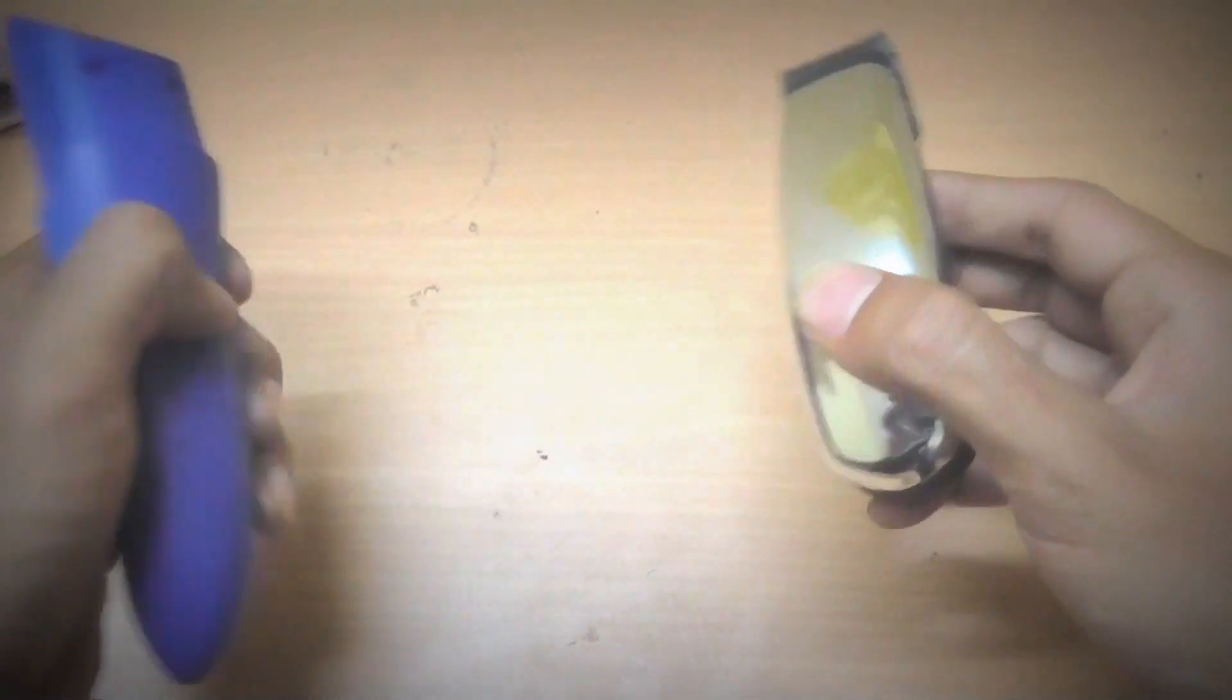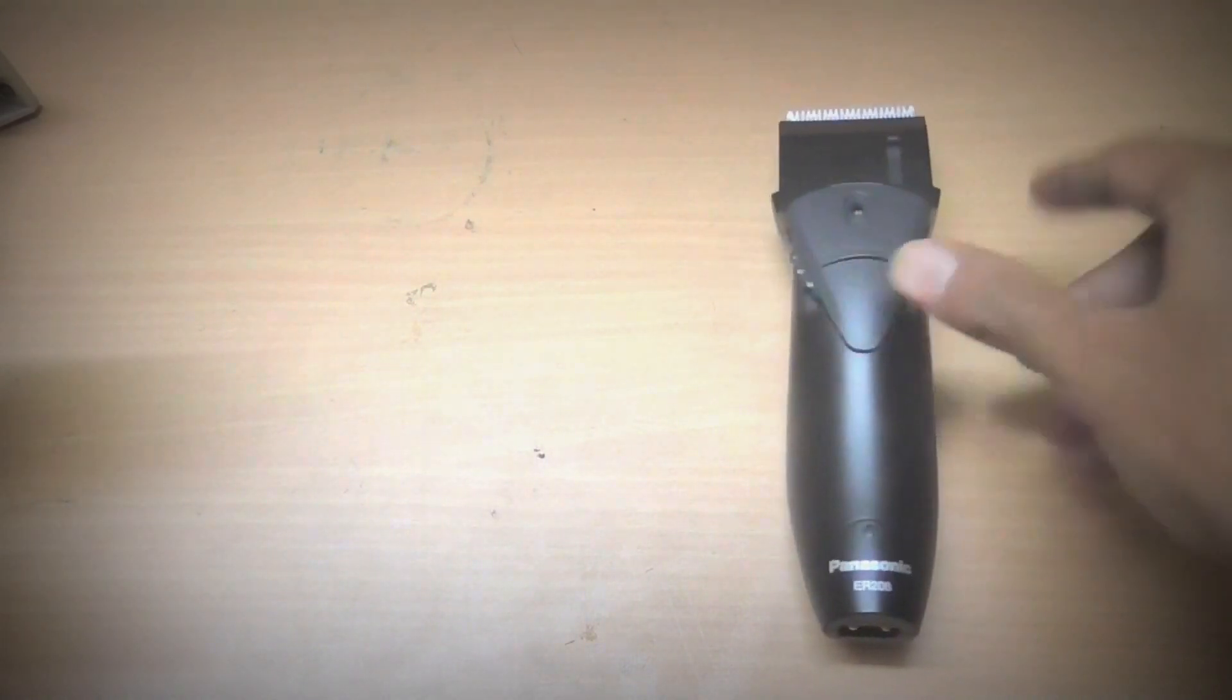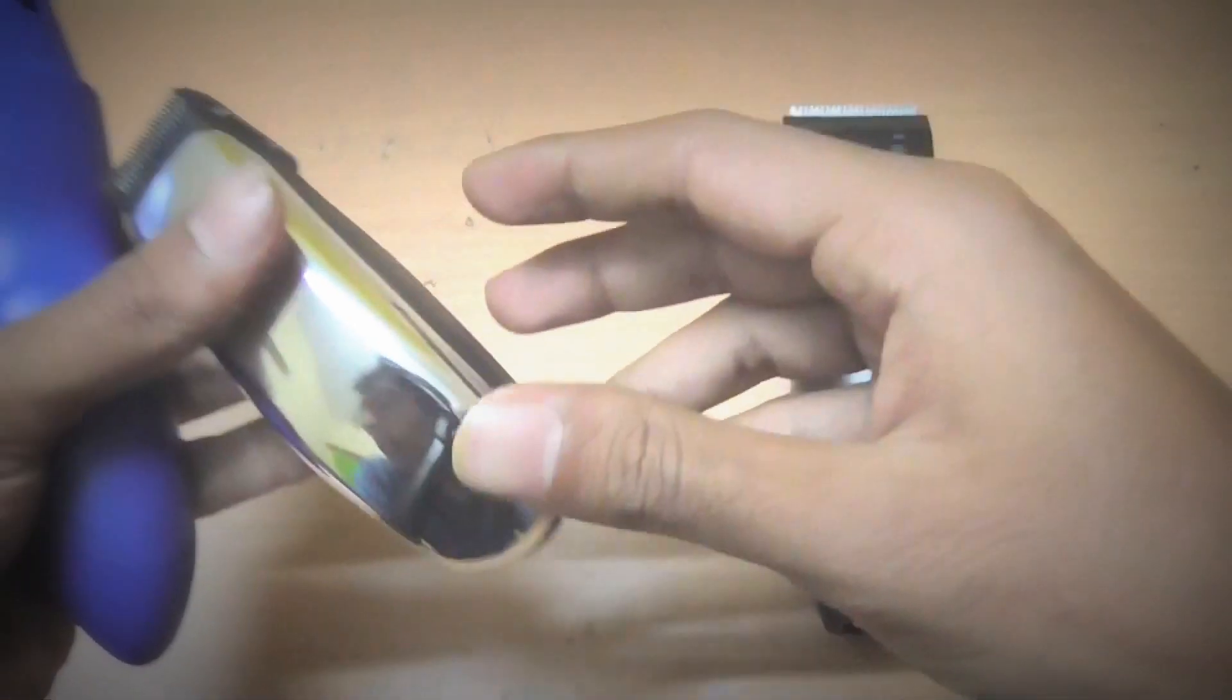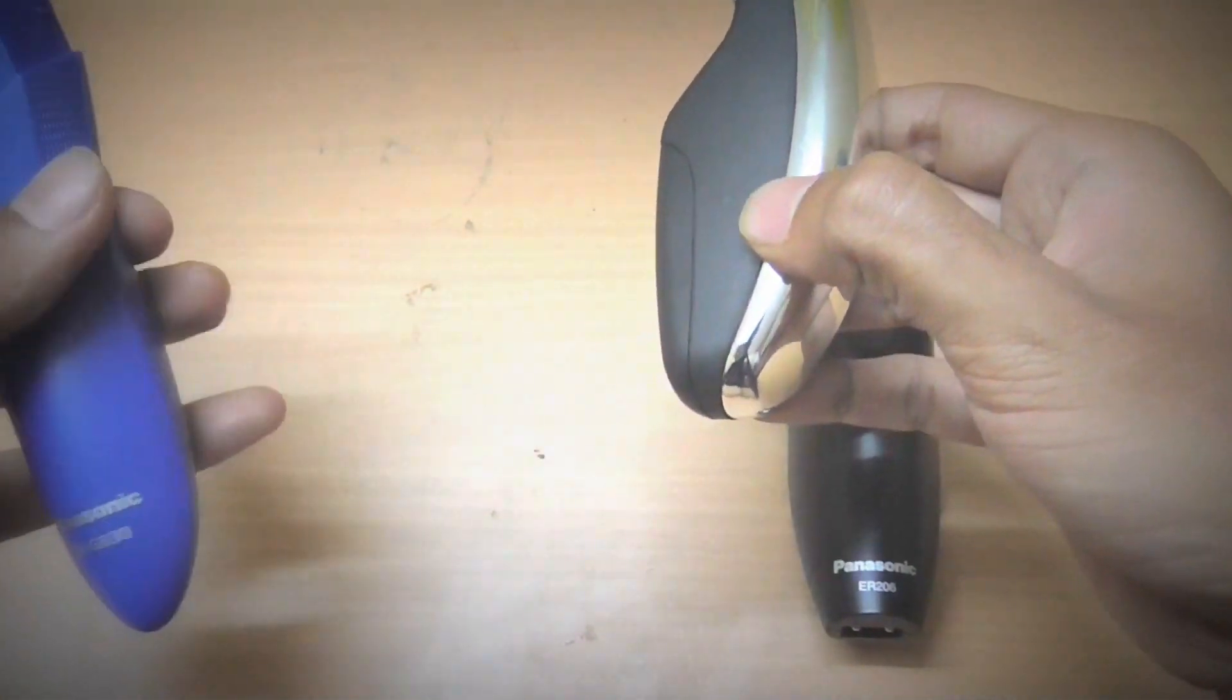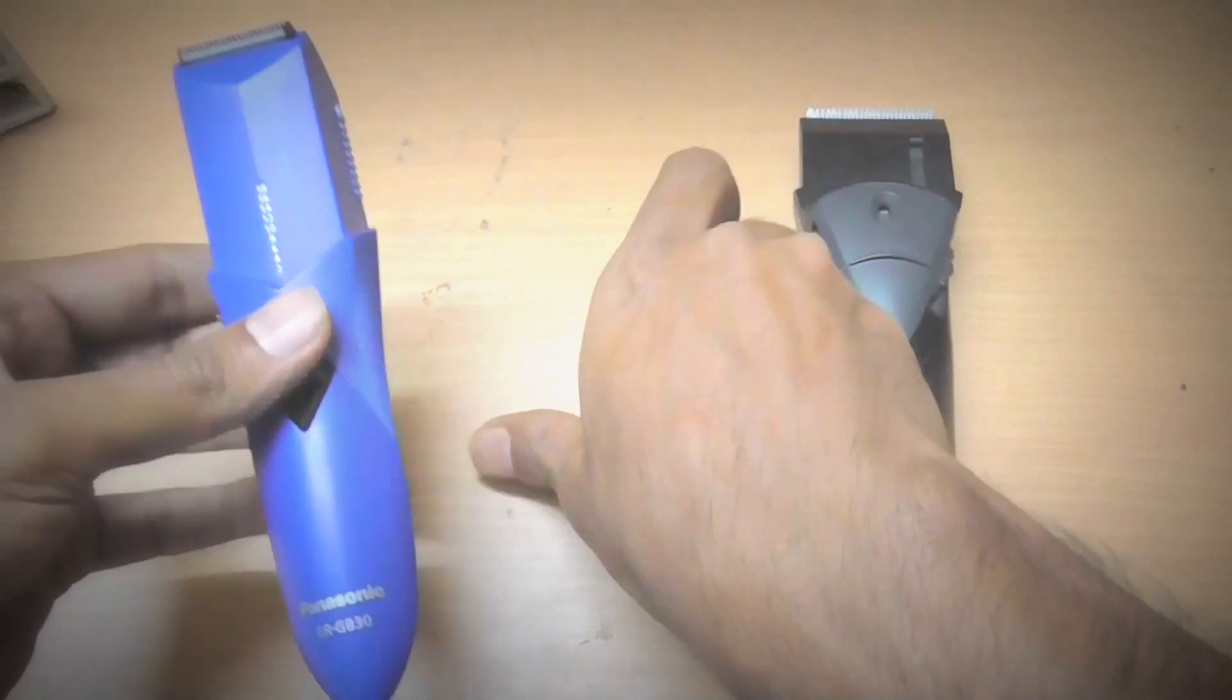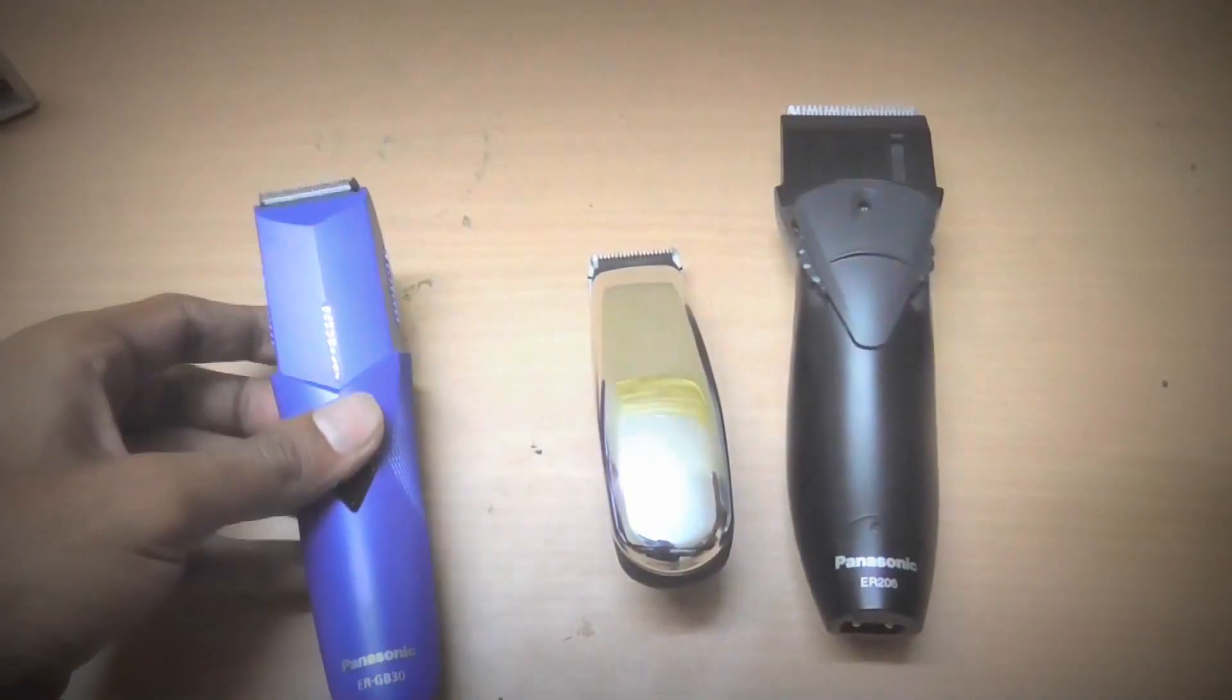On the basis of performance and cost, I will rank these 3 trimmers. The first one is Panasonic ER206. I will rank it on the first position. The second one will be Wahl trimmer. This is because it is more economical and half of the price of this Panasonic ERGB30, which ranked on the third in my list.